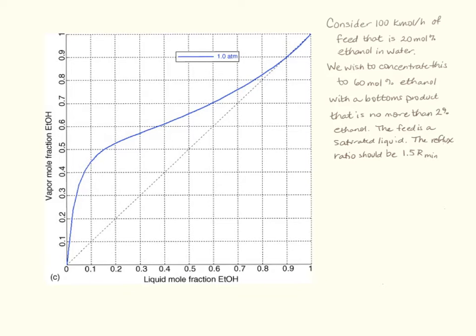Let's look at just one more example of McCabe-Thiele so we can get additional practice before the exam. In this problem, it's very straightforward. We want to feed 100 kilomoles per hour of 20% ethanol. I'm going to plot that point right here on the y equals x line.